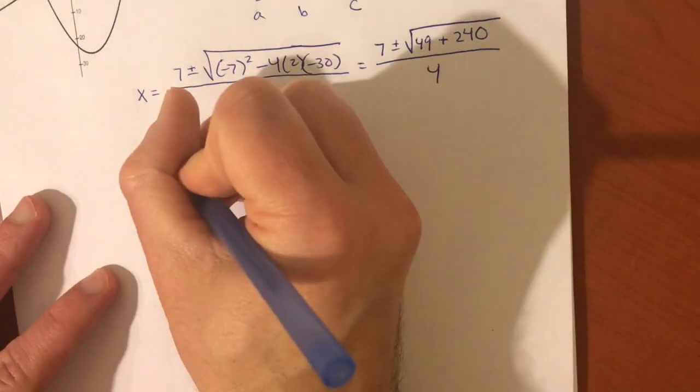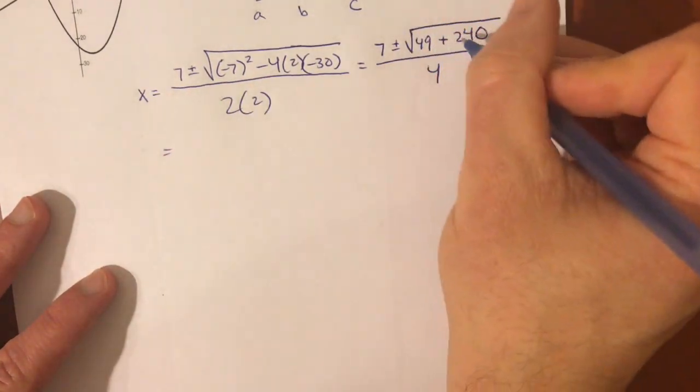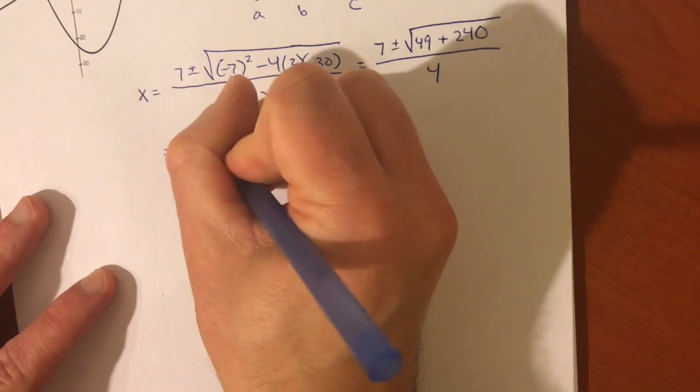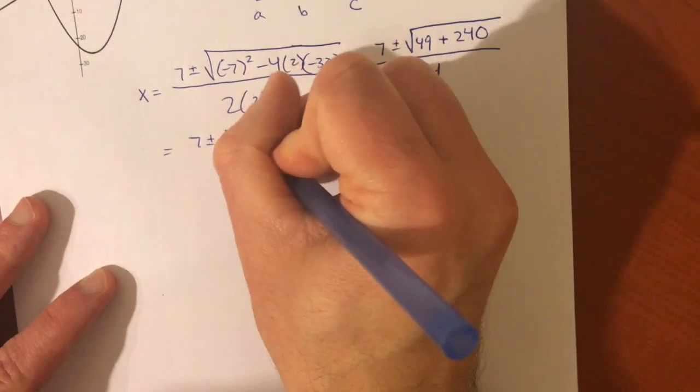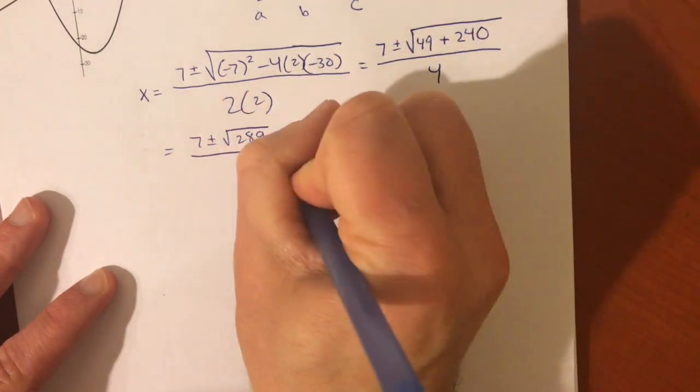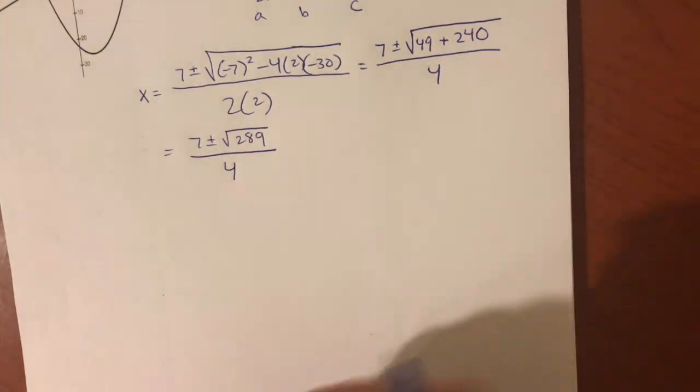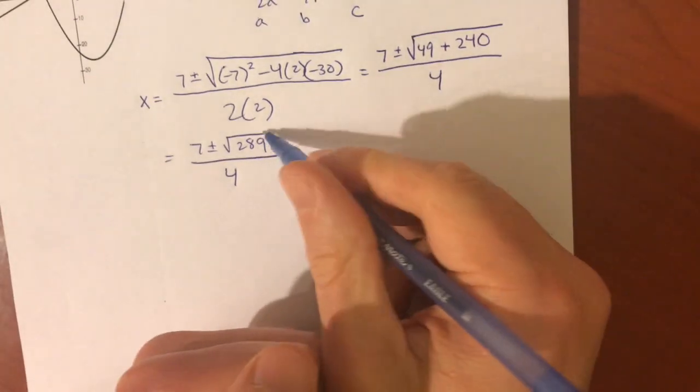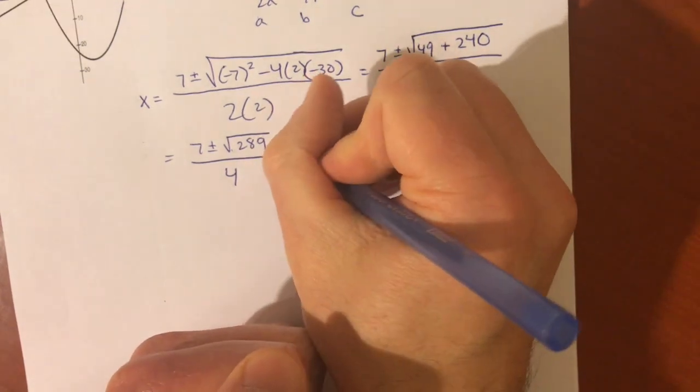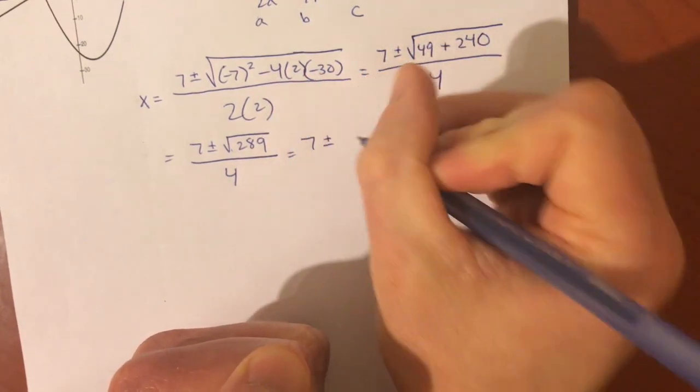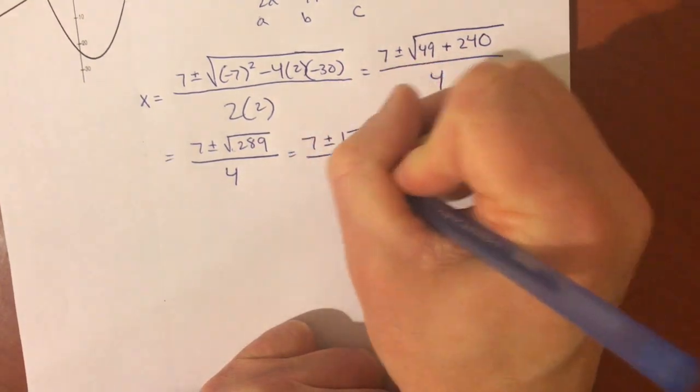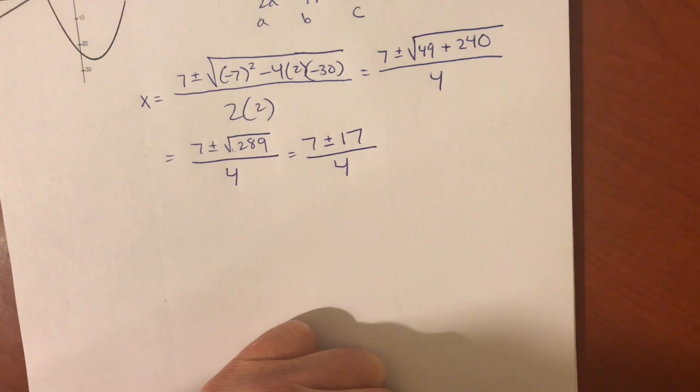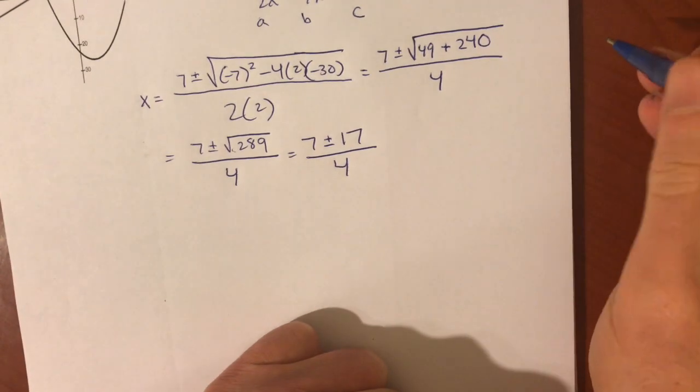Add that inside, remember don't divide by 4 until you've dealt with this square root completely, and you get 289 all divided by 4. And, when you take the square root of 289 on your calculator, you will notice that it's a perfect square. The square root of 289 is 17. So, our answers are actually going to be rational, no decimals needed.